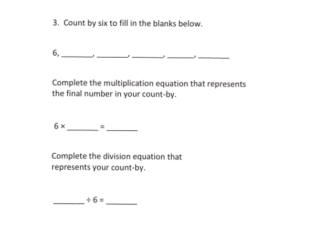It says count by six to fill in the blanks: six, twelve, eighteen, twenty-four, thirty, thirty-six. Now we know that six times six equals thirty-six, because we count one, two, three, four, five, six. So six times six is thirty-six, and if we represent that with division, thirty-six divided by six is six.